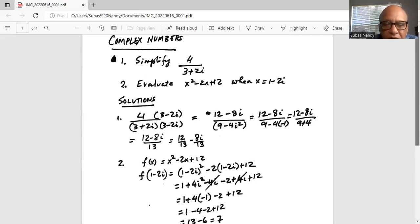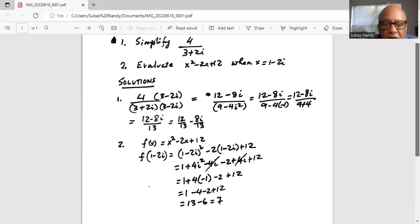Now again, I told you before, i squared is minus 1. So it is 1 plus 4 times minus 1 minus 2 plus 12, which is 1 minus 4 minus 2 plus 12, or 13 minus 6 is 7. So that is the value of the function when x is equal to 1 minus 2i.